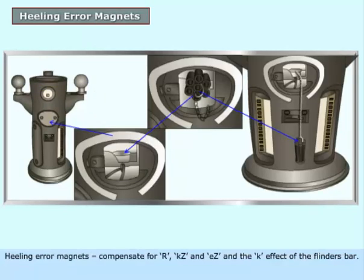Heeling error magnets compensate for R, KZ, and EZ, and the K effect of the Flinders bar.